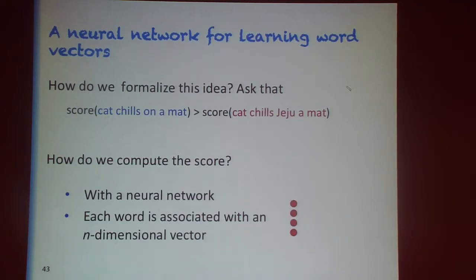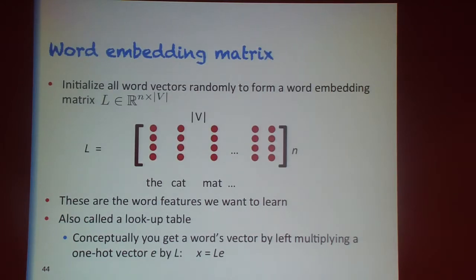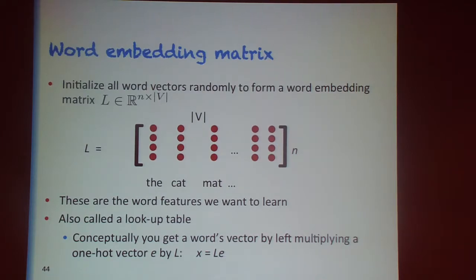So how do we calculate that score? We do it with our neural network, where it associates each word with a dense vector representation. We start with a matrix of size vocabulary-size by embedding-dimensionality (say, 100), initialize it randomly, and then have our model learn in an unsupervised way what is a good representation for words.